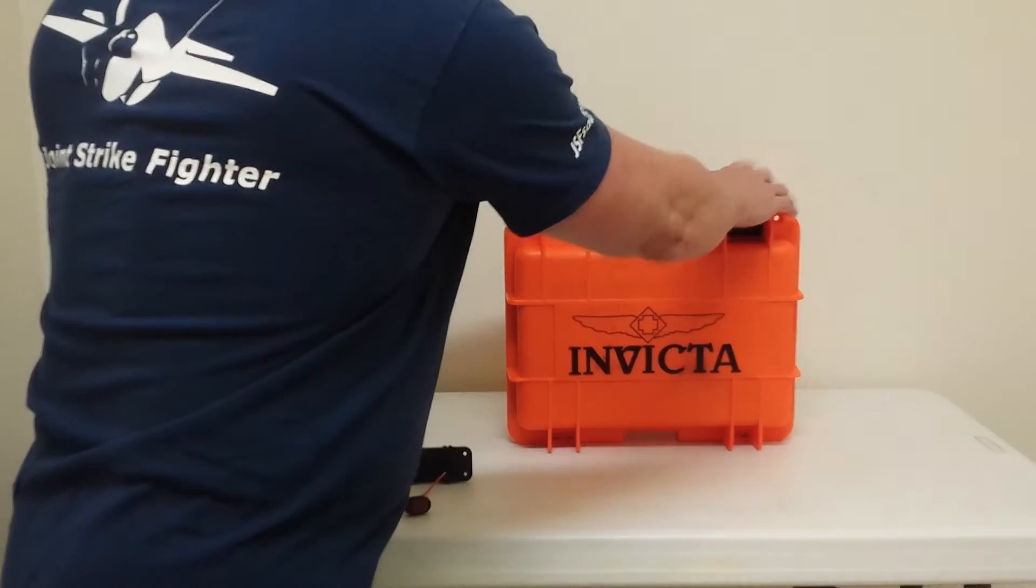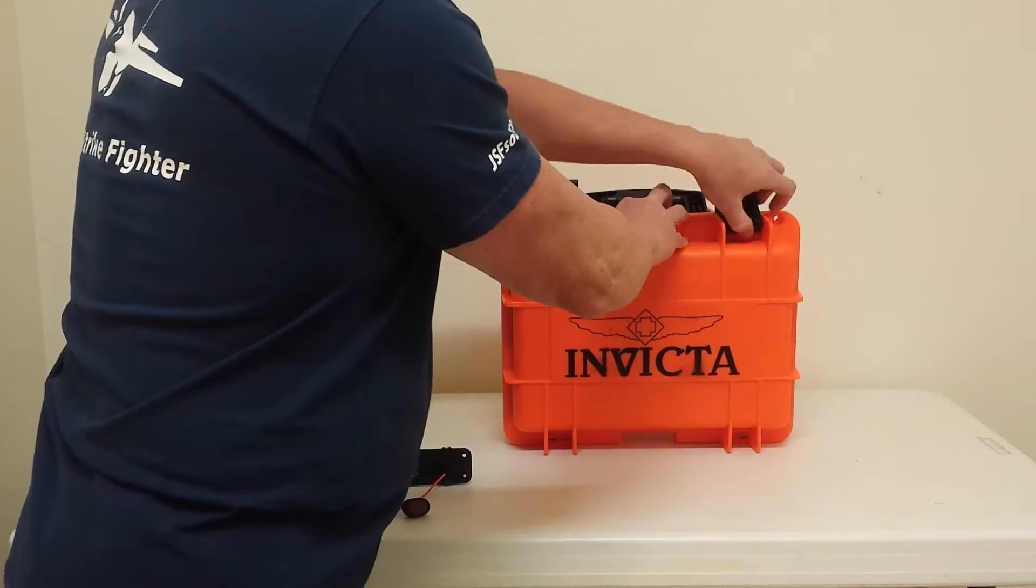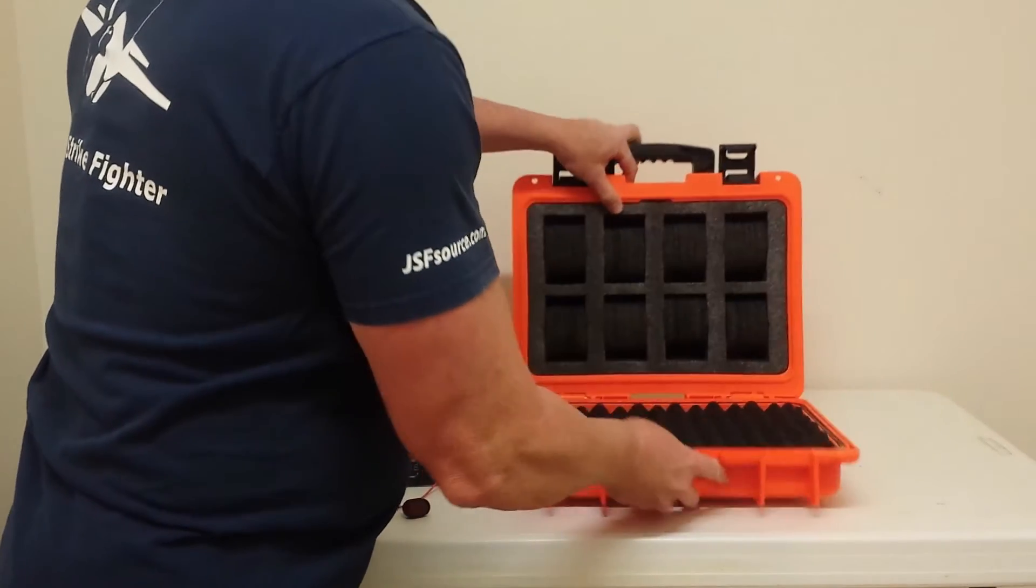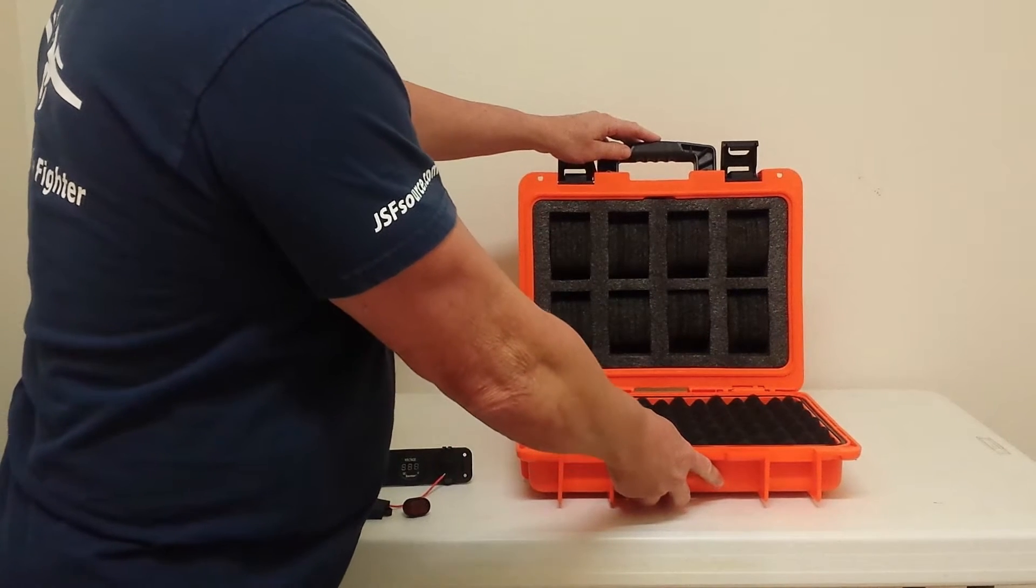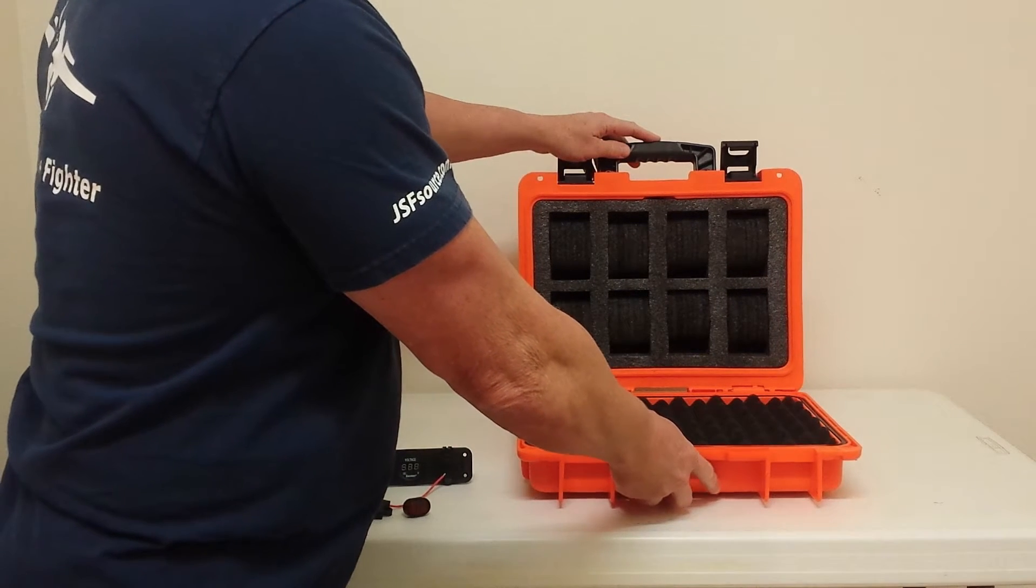This is what the Invicta looks like inside. It's got a nice foam interior so you can cut it out and use it for whatever battery you may have.